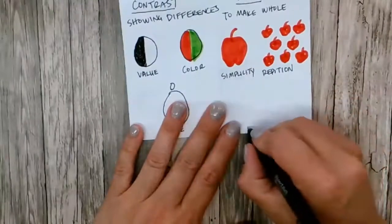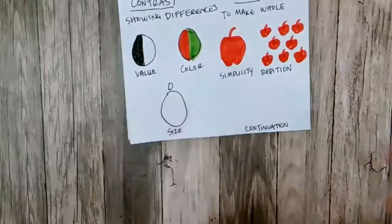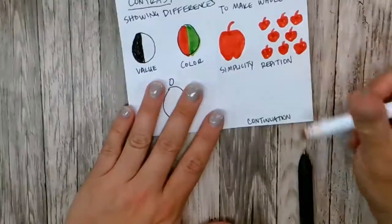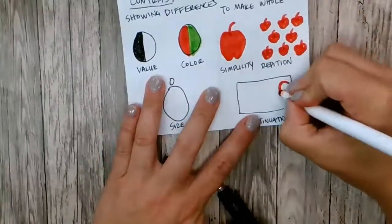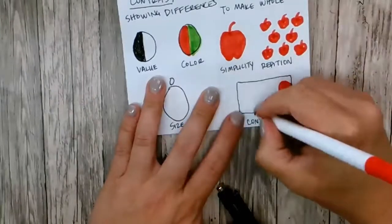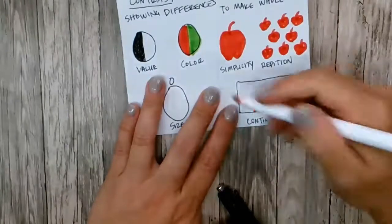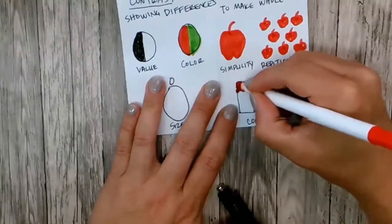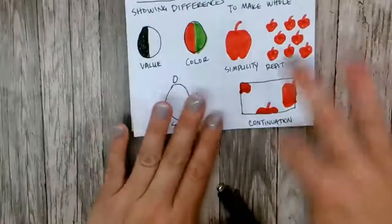And the last one is called continuation. It's kind of like movement where things are continually going round and round and round. So maybe if this is my picture plane here, I have an apple coming off the side here. I have the top of an apple up here. Maybe I have the bottom of the apple here. So your eye kind of continues around to create a unified or a whole.